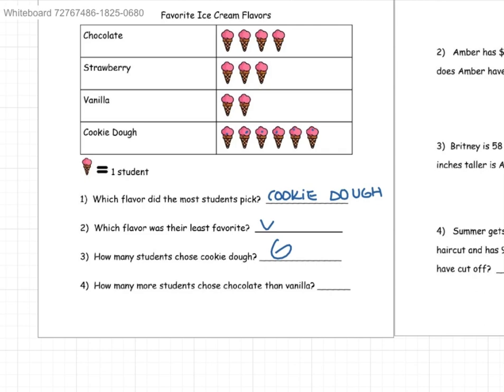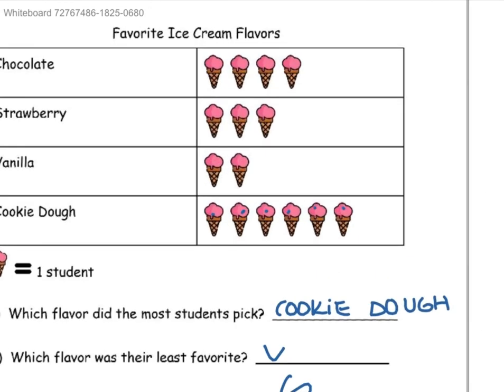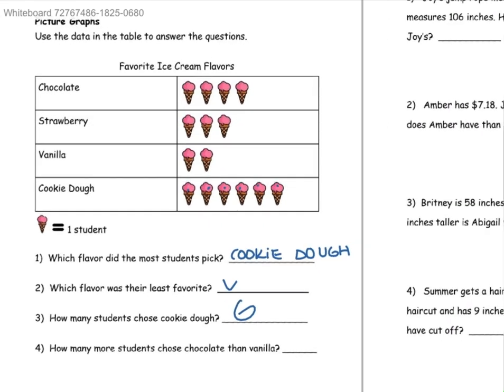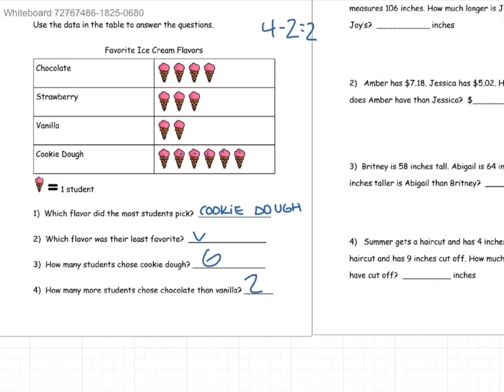And how many more students chose chocolate than vanilla? So right here we can see that chocolate has four votes and vanilla has two. So that would be four minus two, which is equal to two. So two more students chose chocolate than vanilla.